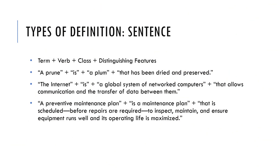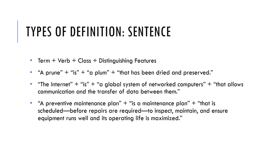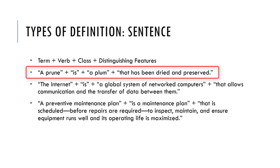Sentence definitions are a little different — they take a specific form: the term, a verb, the larger class, and then the distinguishing features. One example is a prune. A prune is a plum that has been dried and preserved. That last part explains what makes the prune different from other kinds of plums — if it hasn't been dried and preserved, it cannot be called a prune.